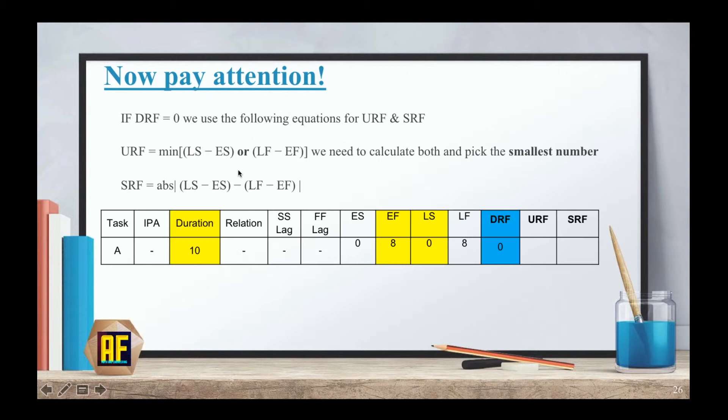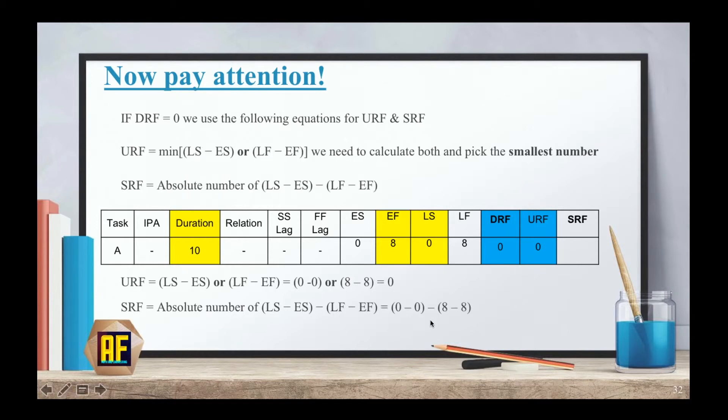So keep your answers close. Let's take activity A again. LS minus ES equals zero minus zero, or eight minus eight, which are both equal zero. So here we don't need to think too much. And our SRF is zero minus zero, which is just zero.